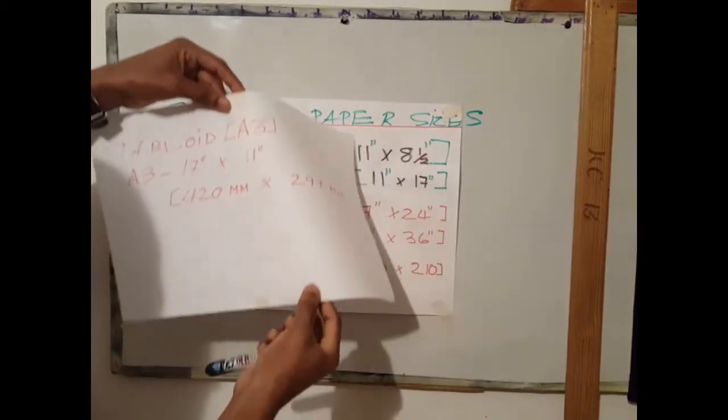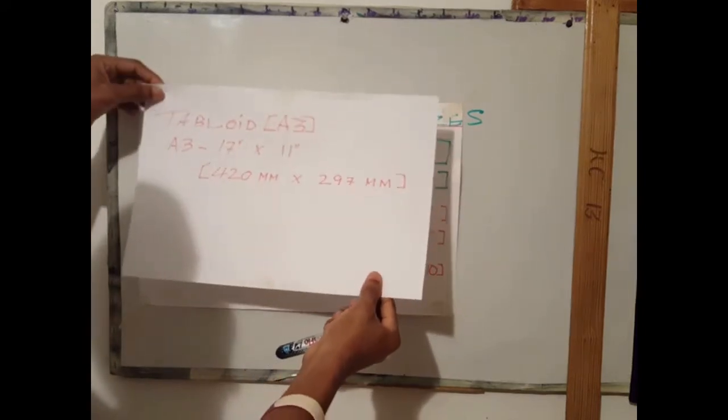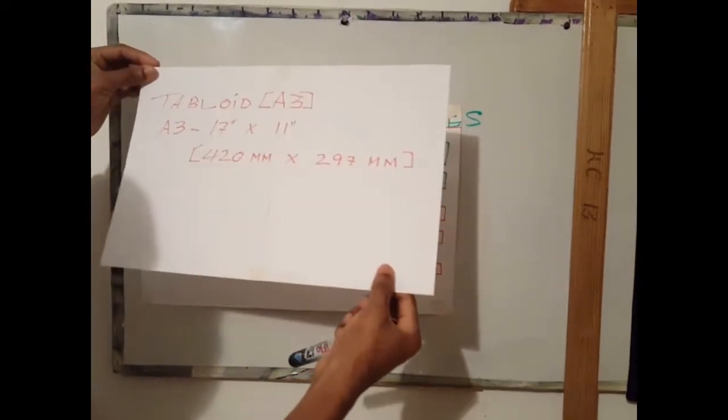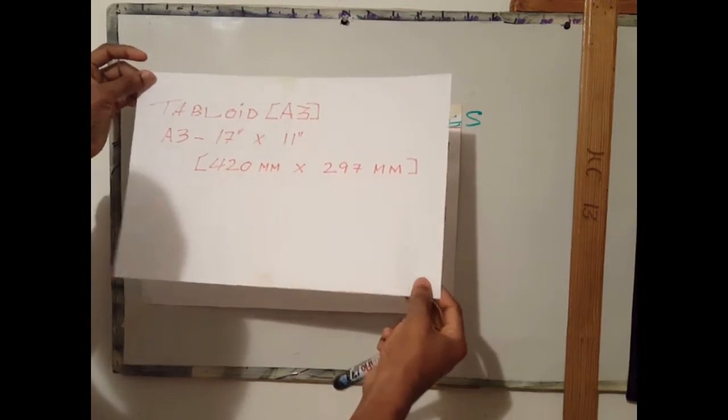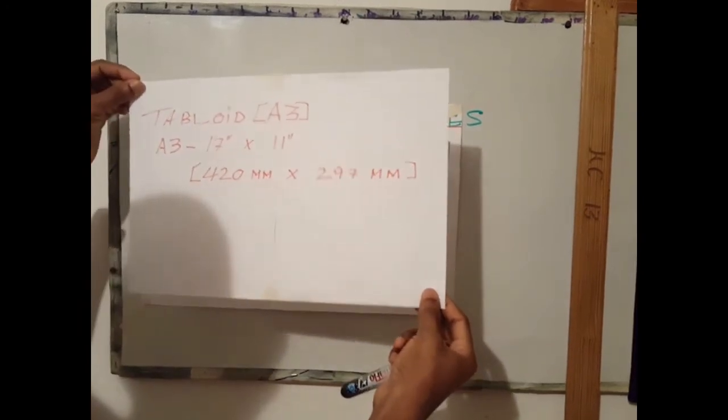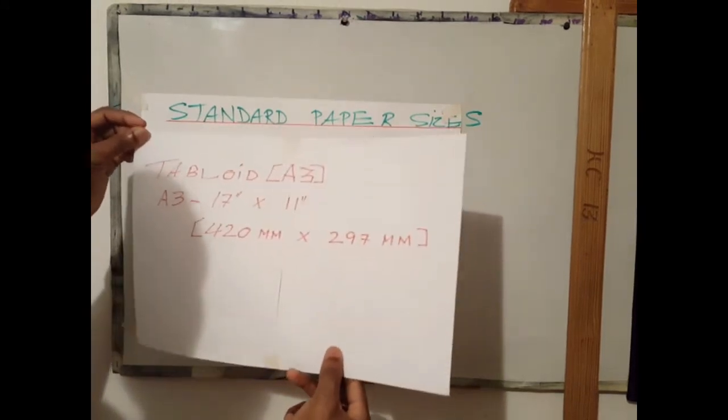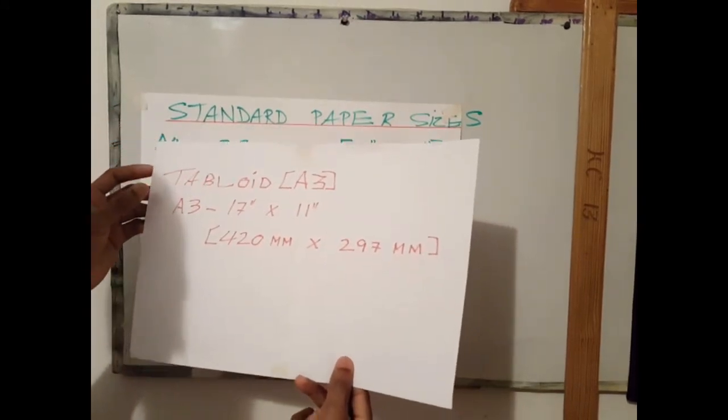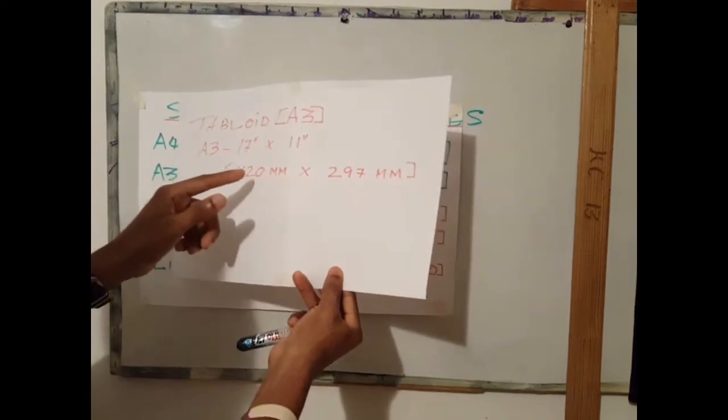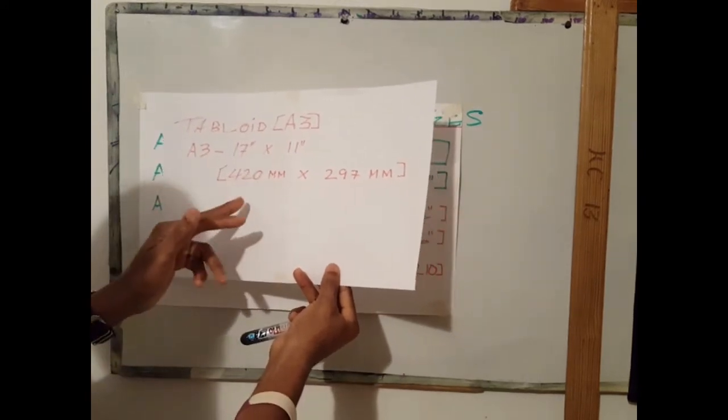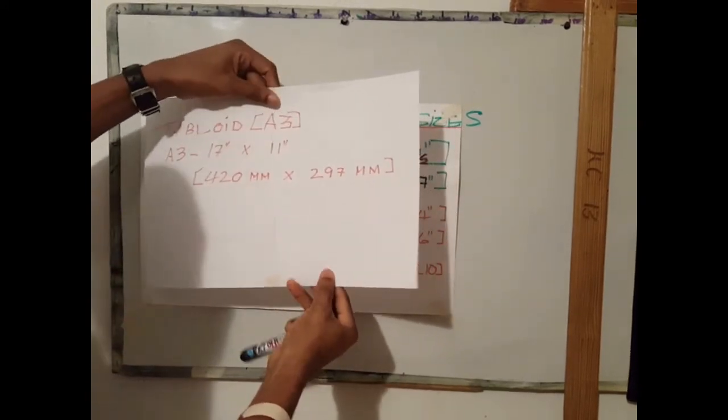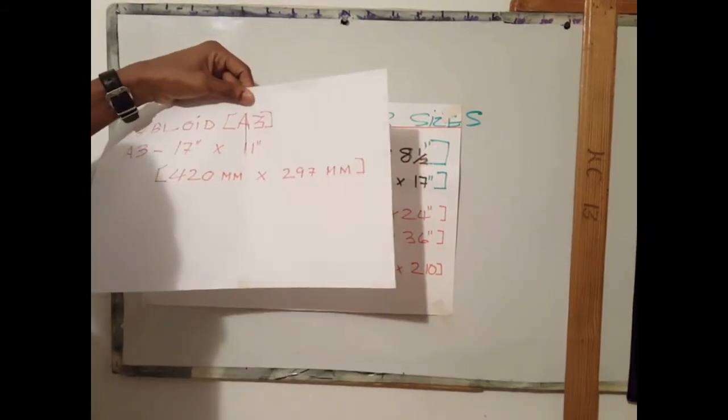This is our tabloid or A3 sheet of paper. This is the one that is normally used or recommended by CSEC. This is also used for some architectural firms. These papers are normally used for building drawings. It has a dimension of 17 inches by 11 inches or 420 millimeters by 297 millimeters.